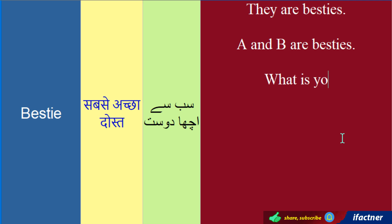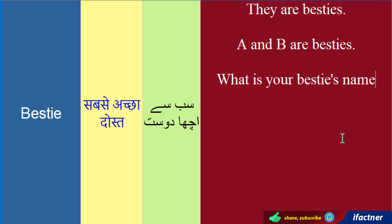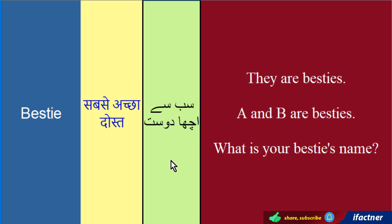What is your bestie's name? Yaani ke aapke sab se achhe dost, sab se achhi saheli ka naam kia hai. Yahan pe aapne ek cheez note ki hogi ke mainay 'besties' ke saath apostrophe s lagaya hai — bestie ke saath. Toh ye 'bestie's' yaani ke 'bestie ka naam.'